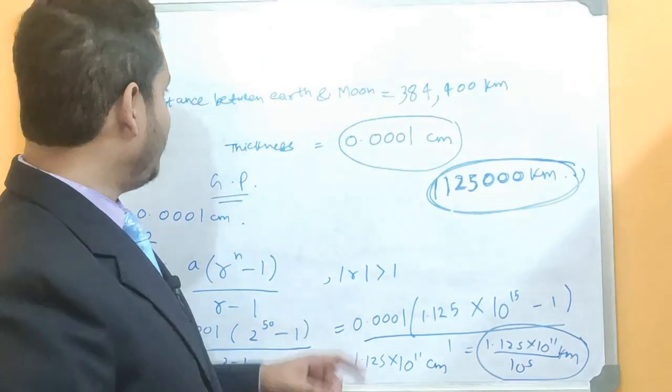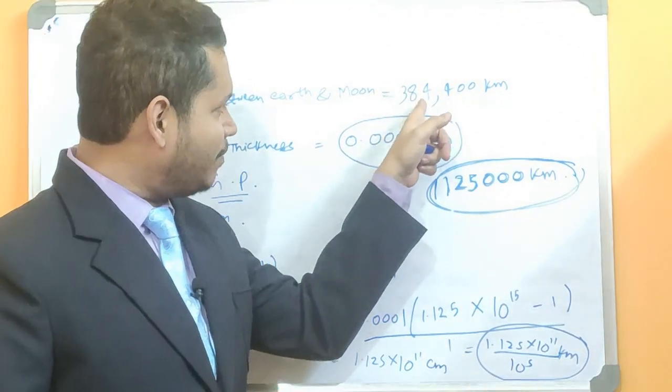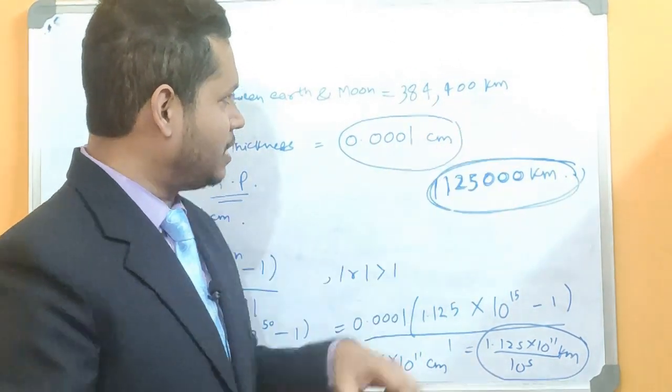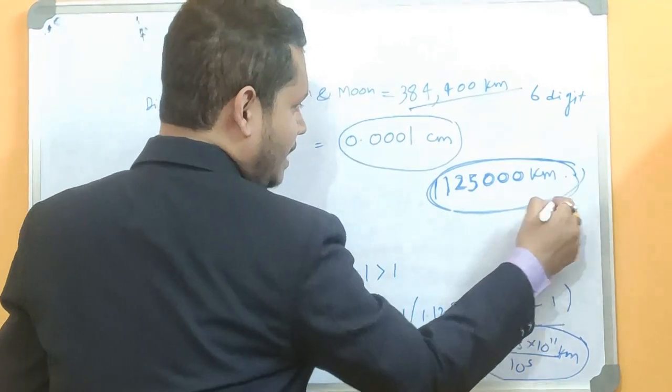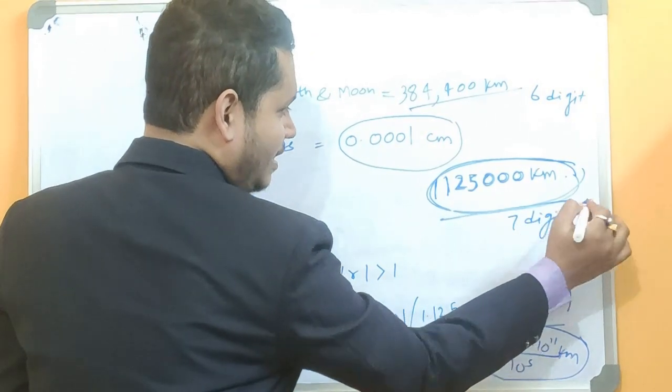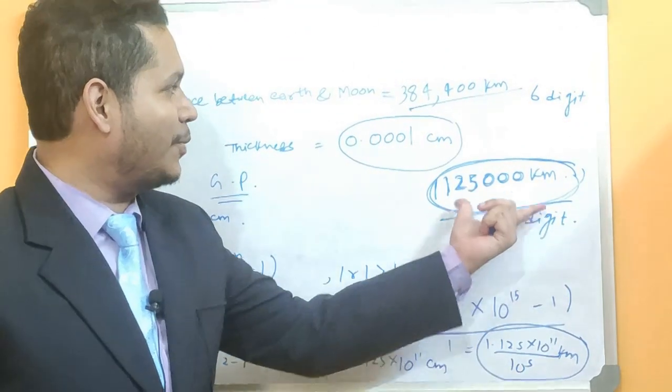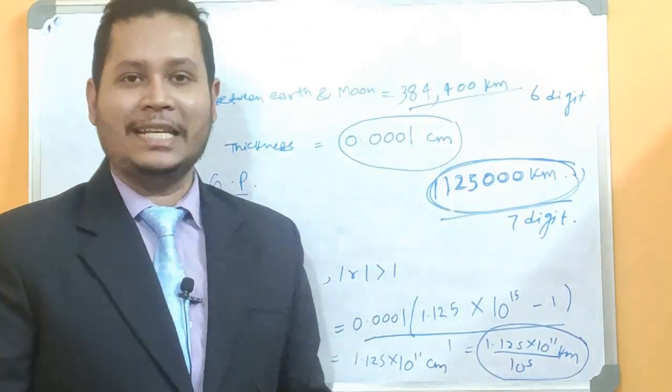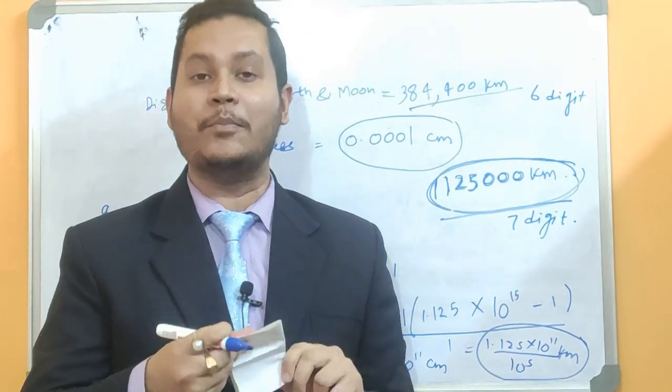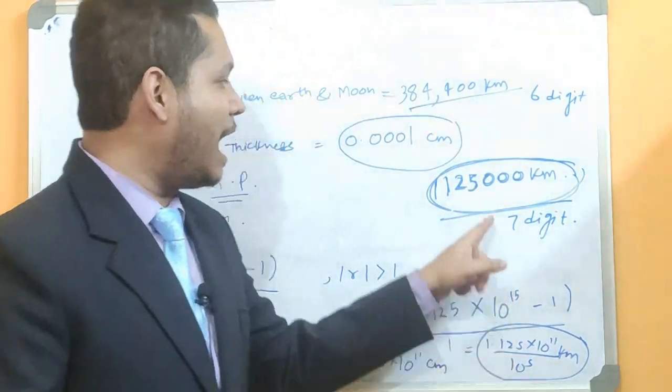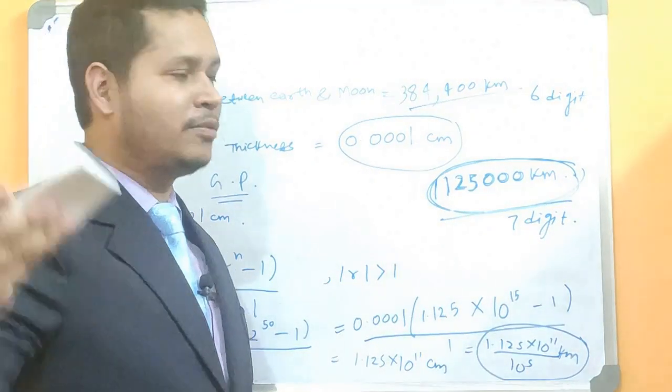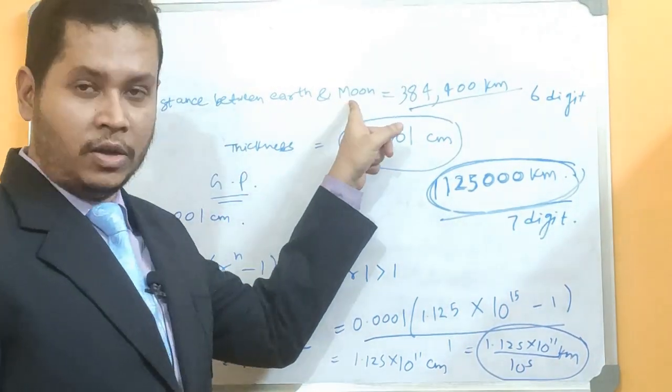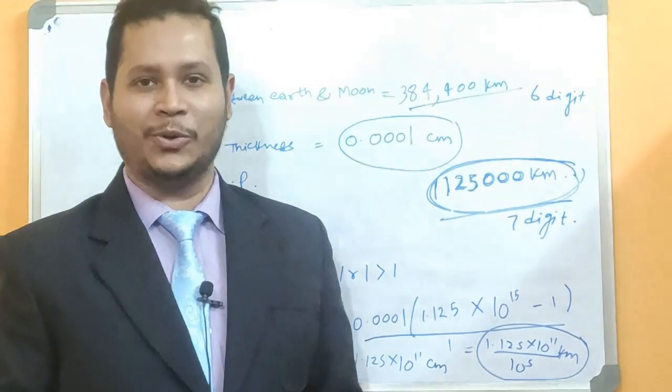So the distance between the Earth and the moon was 384,400 kilometers. It was a 6 digit number. And this one is a 7 digit number. So it's clear that this value is more than this. So that means if I am folding a paper 50 times, I am going to cross moon, not only reach moon and cross moon. So I am covering more than the distance between the Earth and the moon. Isn't it?